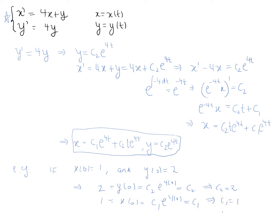With those initial conditions, c1 equals 1 and c2 equals 2, giving the explicit solution x equals e to the 4t plus 2t e to the 4t, and y equals 2 e to the 4t.